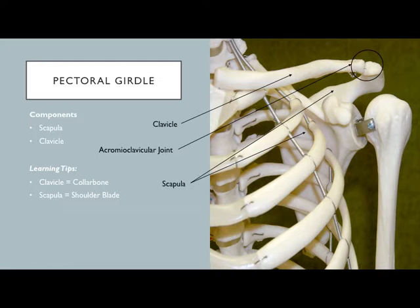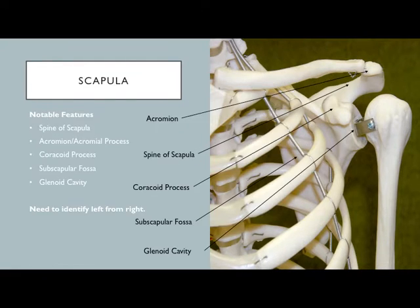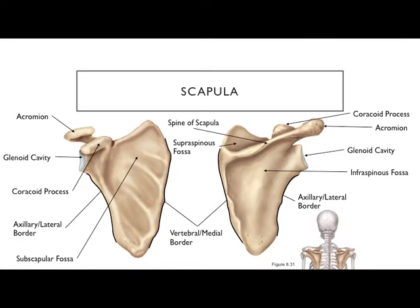You'll need to know sides — left from right — on these bones. The hole in the scapula is the glenoid cavity, where the humerus fits in. It projects laterally. On the scapula, the glenoid cavity is where the head of the humerus articulates to form the shoulder joint.